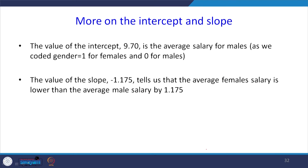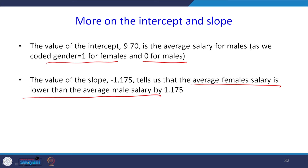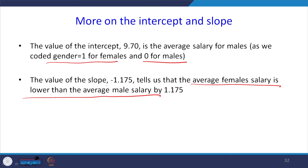The value of the intercept is 9.7 — the average salary for males. The slope of −1.175 tells us that the average female salary is lower than the average male salary by 1.175 units. If the coefficient were positive, females would be getting more salary than males. Because it is negative, females are getting lesser salary compared to males.